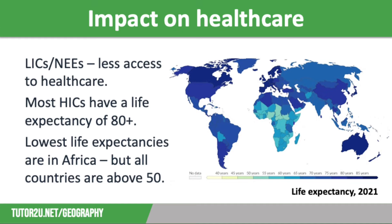As a result, life expectancy is significantly higher in HICs than in NEEs and LICs, and you can see this from the Our World in Data map on the screen. Most HICs now have a life expectancy of 80 years or more. Japan has the highest figure at 84.7, with Australia closely behind at 84.3 years. The UK currently has a life expectancy of 80.7, which is actually the lowest in Western Europe. Unsurprisingly, the countries with the lowest life expectancy are found in Africa. However, there are no countries now with a life expectancy below 50, which is a significant improvement over the last 20 years. Chad has the lowest life expectancy at 52.5 years.